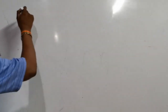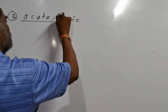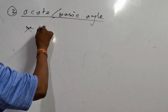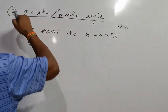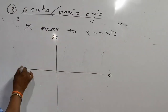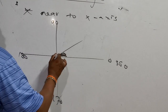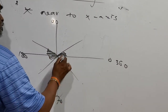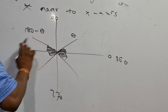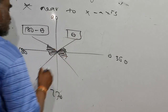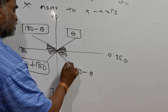The third important concept is the acute angle, also called the basic angle or corresponding angle. This angle is always attached to or near to the x-axis. The formulas are: in the first quadrant it's θ; in the second quadrant it's 180° - θ; in the third quadrant it's 180° + θ; and in the fourth quadrant it's 360° - θ.